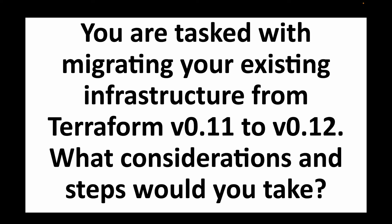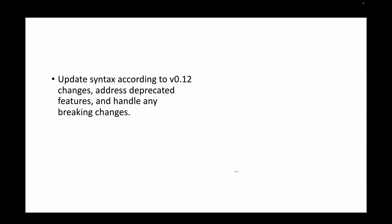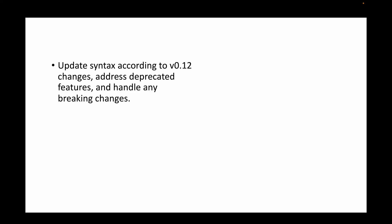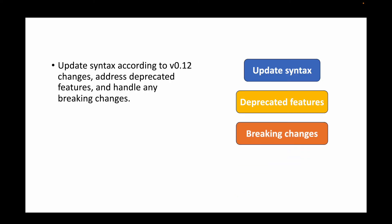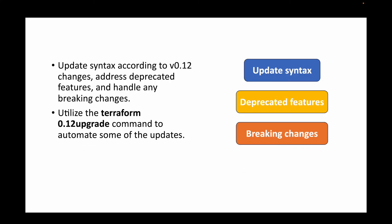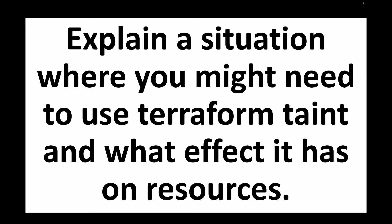The next question is: you're tasked with migrating existing infrastructure from Terraform version 0.11 to version 0.12 — what considerations and steps would you take? When upgrading Terraform versions, you must update the syntax in configuration files accordingly, address any deprecated features, and handle breaking changes. You can also use the 'terraform 0.12upgrade' command to automatically handle some of these updates.